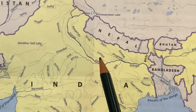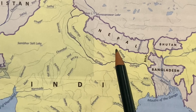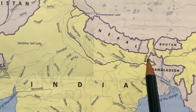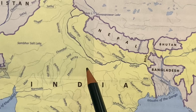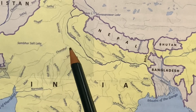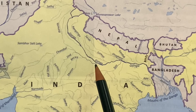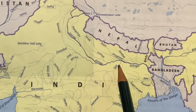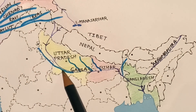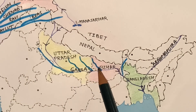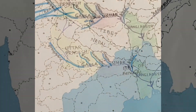Ganga's left bank tributaries are Gomti, Ghagra, Gandak, and Kosi. Its right bank tributaries are the Yamuna, which joins the Ganga at Allahabad, and the river Son. You will draw blue lines for all these tributaries and write their names on top of the lines.